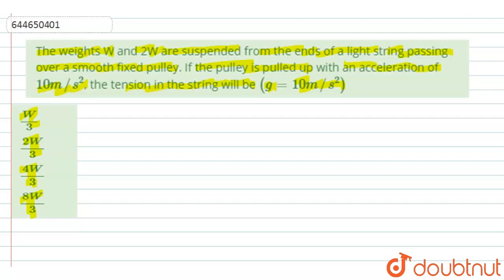Let me make the figure first. So we have a pulley like this over which 2 masses are hanging. One is given of weight w, so w will be acting in downward direction like this, and another one is of weight 2w, and 2w will be acting in the downward direction like this.